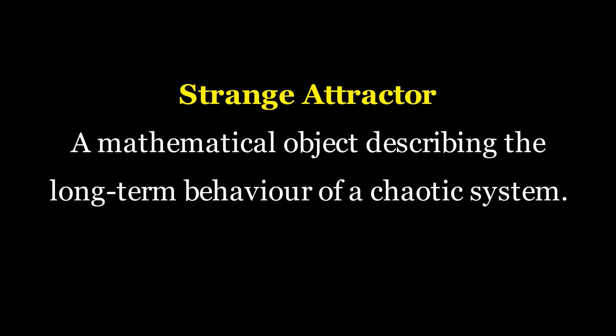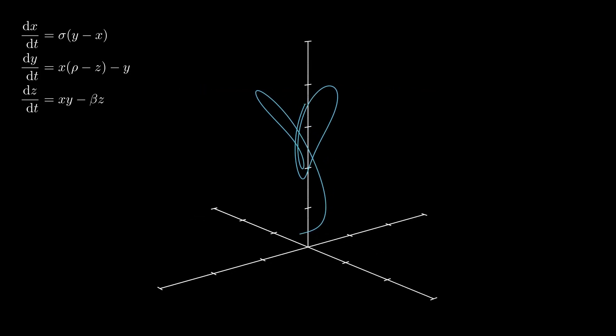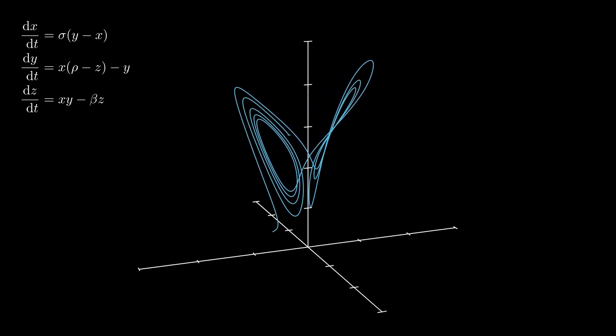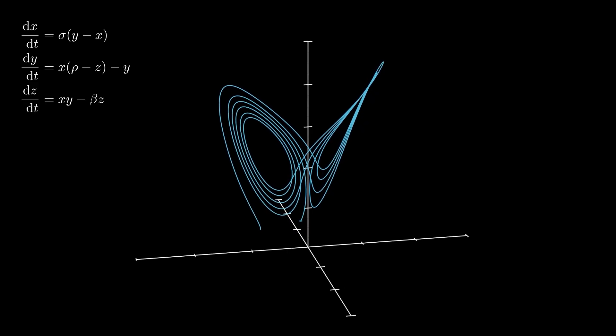Well, a strange attractor is defined as a mathematical object describing the long-term behaviour of a chaotic system. The most well-known strange attractor is undoubtedly the Lorentz attractor. Characterised by its butterfly-like form, it is described by a system of three ordinary differential equations and was first developed to model atmospheric convection.